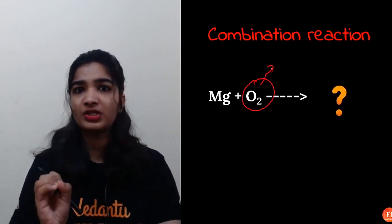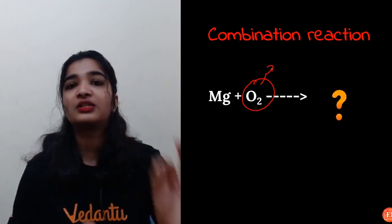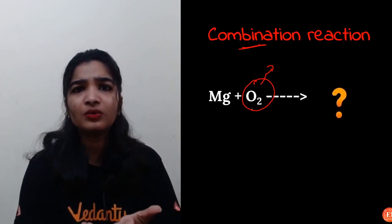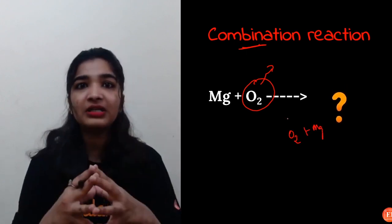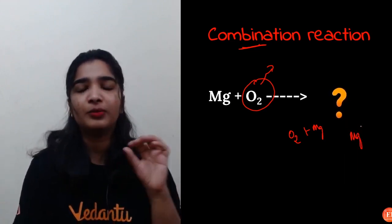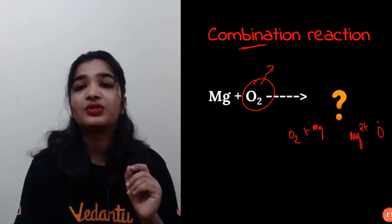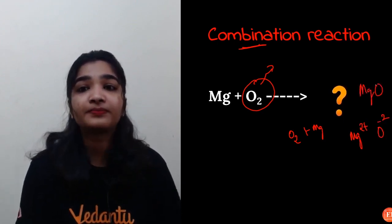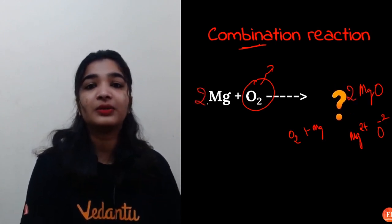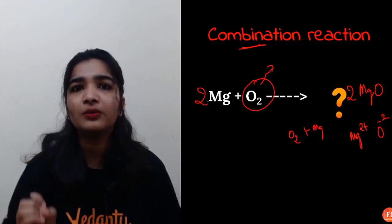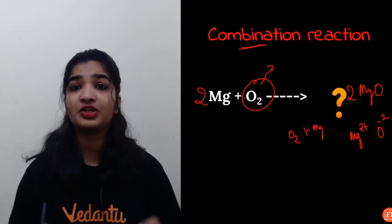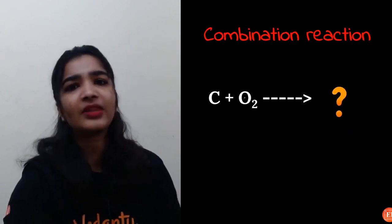This here is a combination reaction. Whenever two elements are combining — and note that O₂ is a molecule of an element, not a compound — it is always a combination reaction and you get only one product. For Mg + O₂, you cannot reverse it; they combine to give a single product. Using the criss-cross method, Mg has valency +2 and oxygen is −2, so the product is MgO. To balance: 2Mg + O₂ → 2MgO.